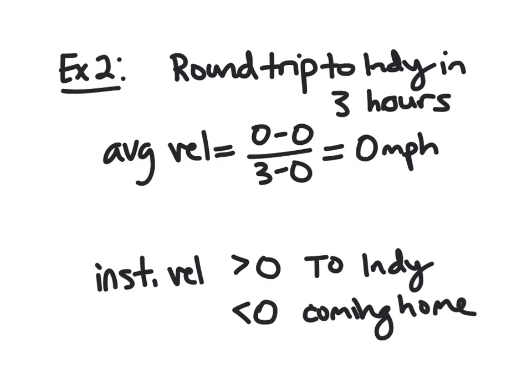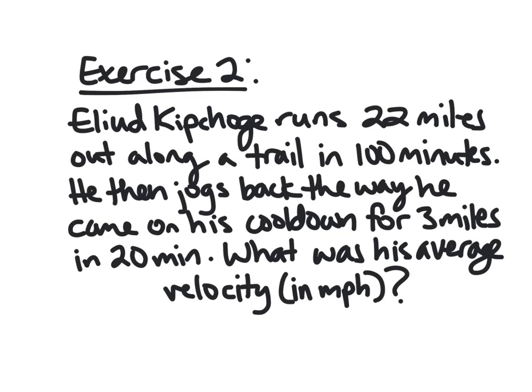Alright, so I'm going to close this with one more exercise, it'll be on edfinity. And then that'll be all. Alright, so Eliud Kipchoge, the Kenyan world record holder in the marathon, let's just say he's out for a workout, running 22 miles straight out along a trail, in one direction in 100 minutes. And then once he's done with that, he turns around and jogs back the way he came on his cool down for three miles in 20 minutes. I want you to find his average velocity for the entire run in miles per hour.